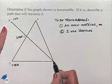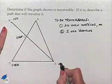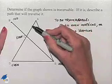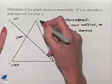For E, we have one, two, three edges. So this is going to be odd. And then at our vertex A, we have one, two edges. So this is going to be even.